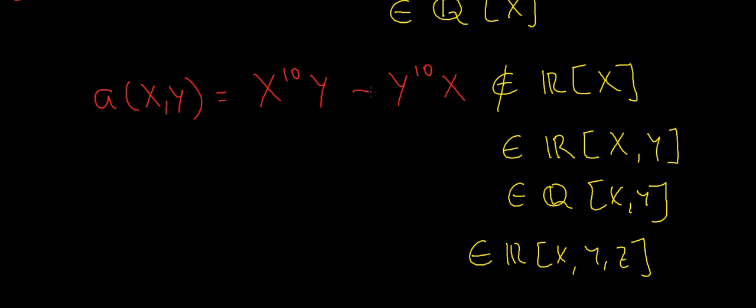Although the z doesn't actually appear in this polynomial, what you could do is define a(x,y,z) to be x to the 10 y minus y to the 10 x, and that would actually still be a polynomial inside R[x,y,z]. It's just that the coefficients of all the z terms are equal to 0. So this still technically lies inside R[x,y,z].